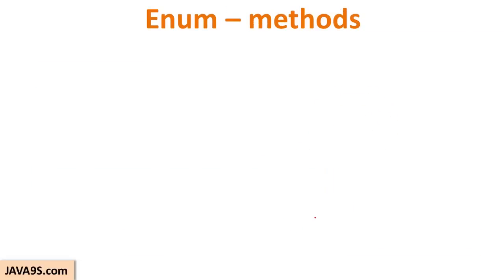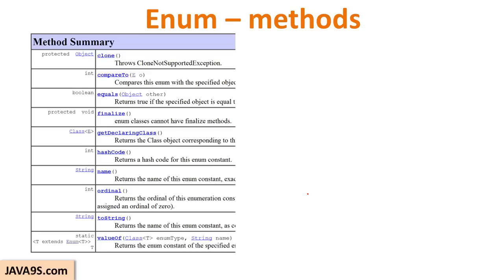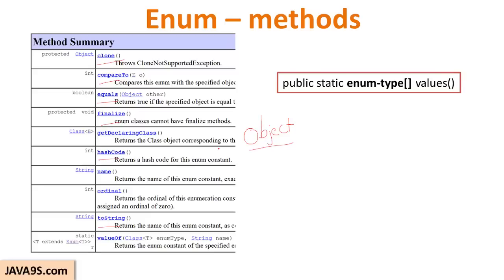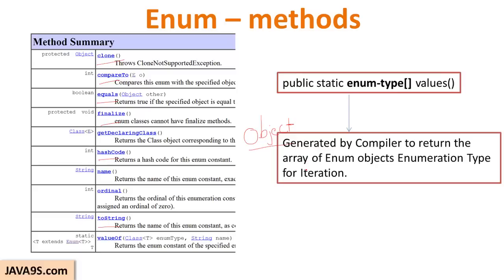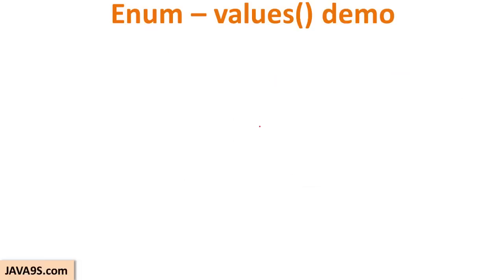Now let us see what methods are available in an enum by default. Looking at the Javadoc, you can see methods like equals, finalize, hashCode, toString, compareTo, and clone. These methods suggest that enum actually extends Object — meaning an enum is declared as a class. Apart from these, there are two important methods not part of the Javadoc. One is the values() method, which returns an array of enum type objects. This is generated by the compiler to return an array of enumeration objects.